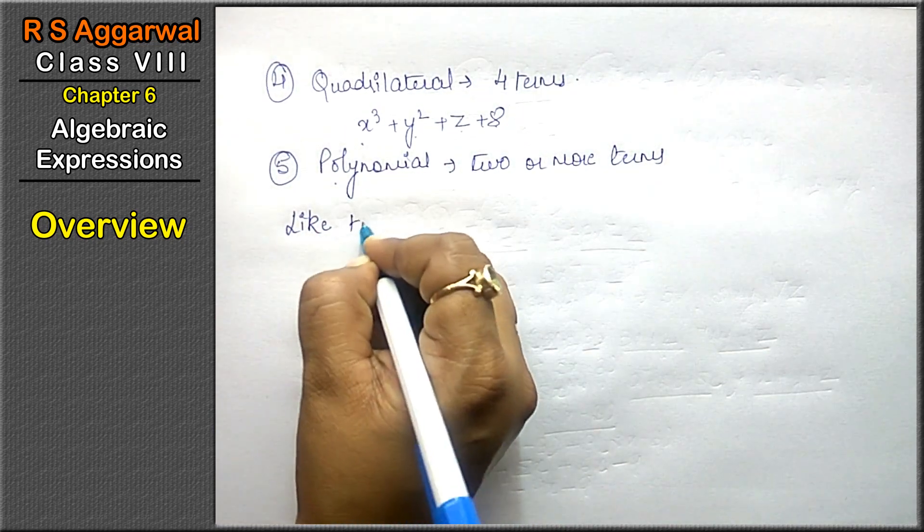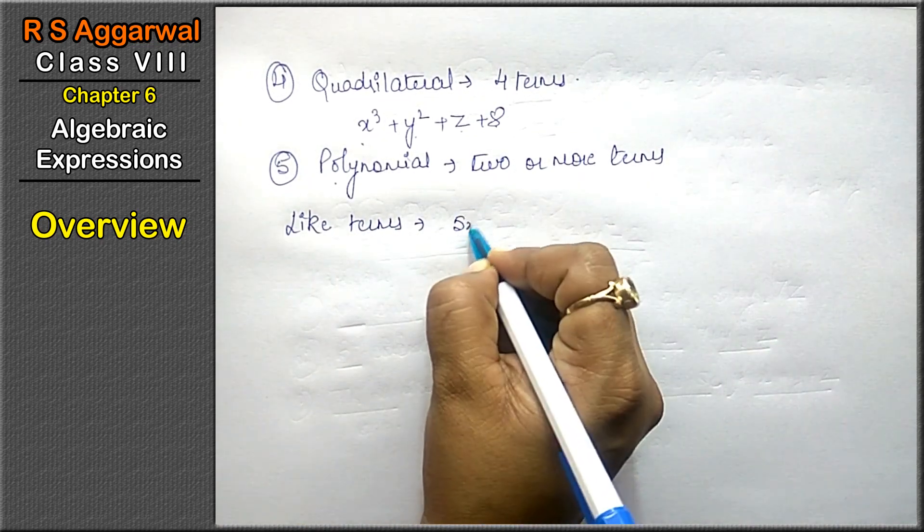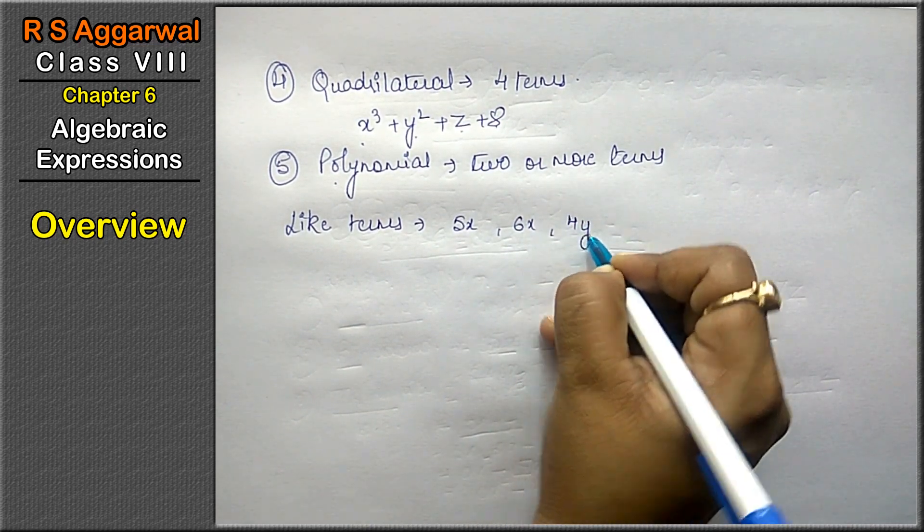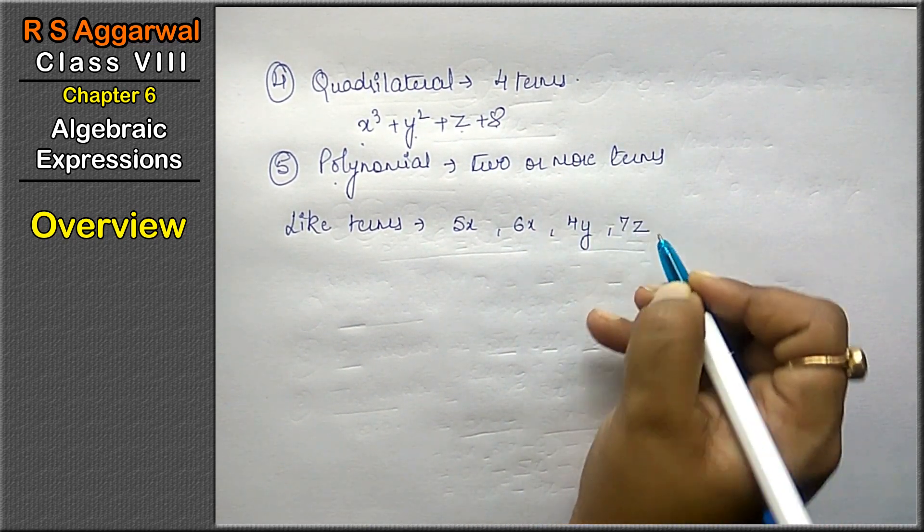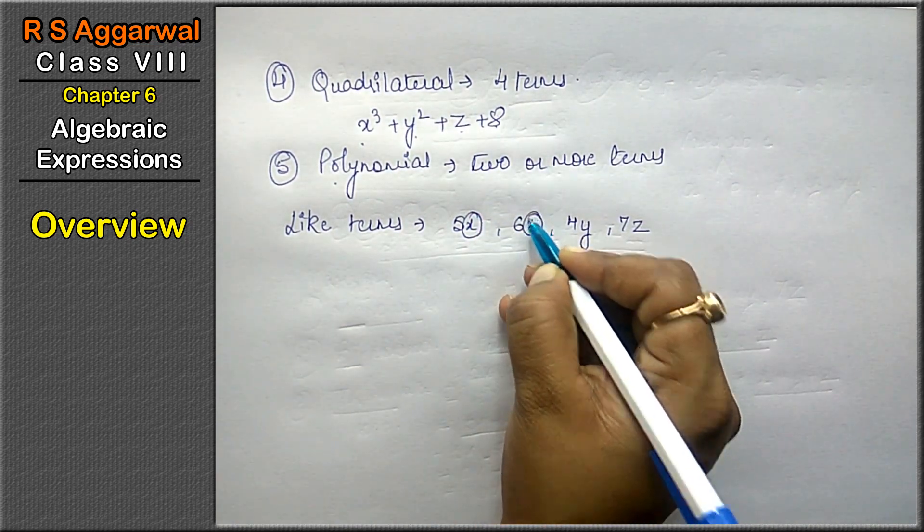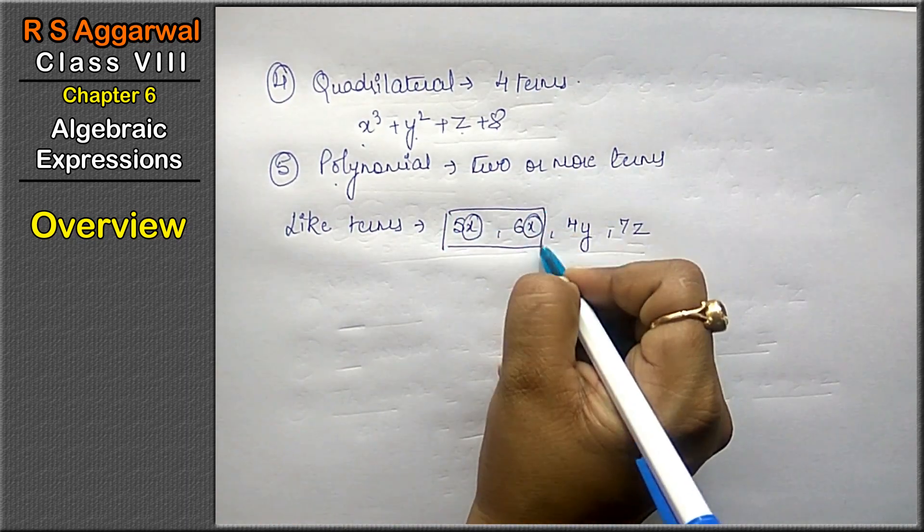what are like terms? Like terms, for example, 5x, 6x, 4y, 7z. Which are the like terms? Those whose variables are the same. They are called the like terms.